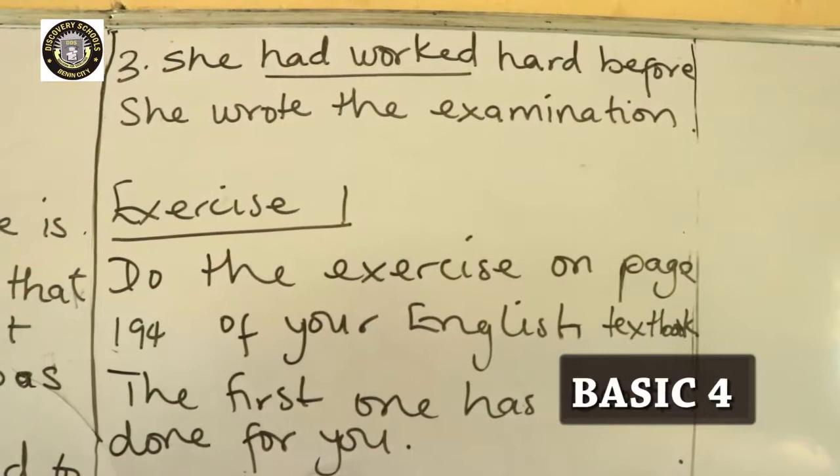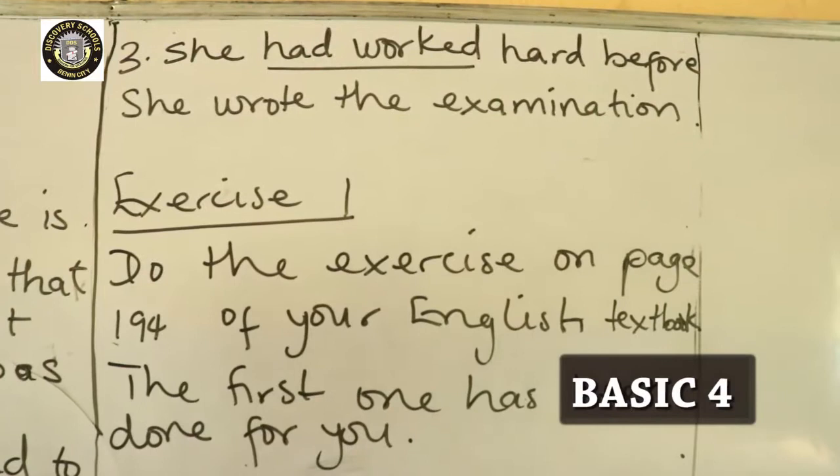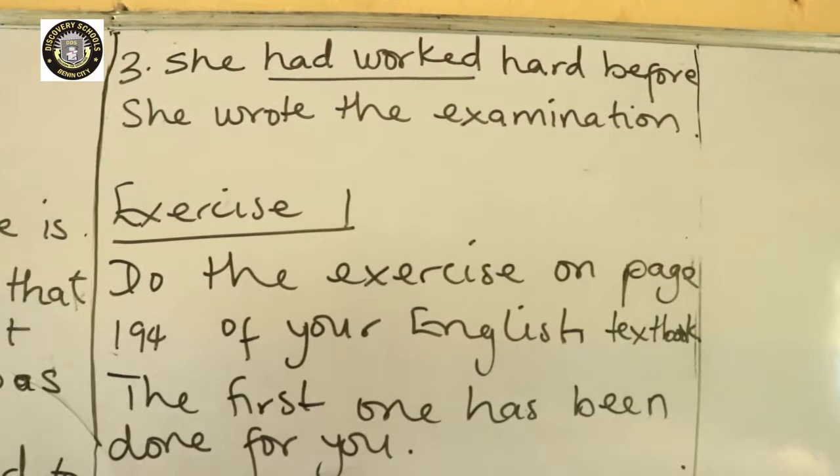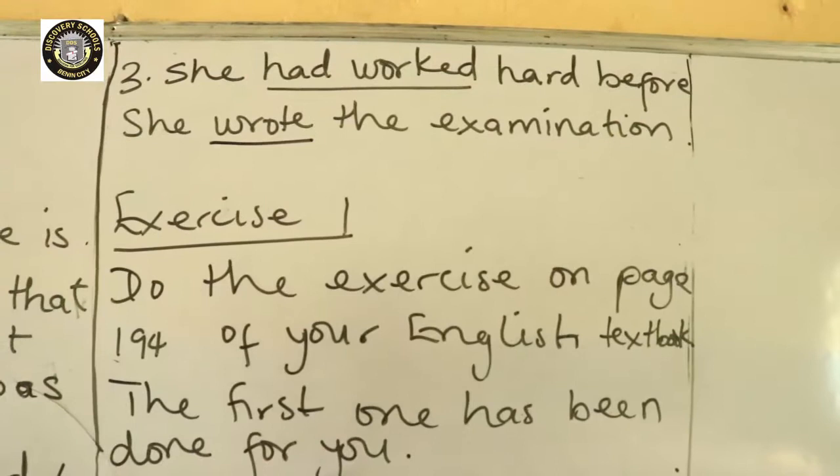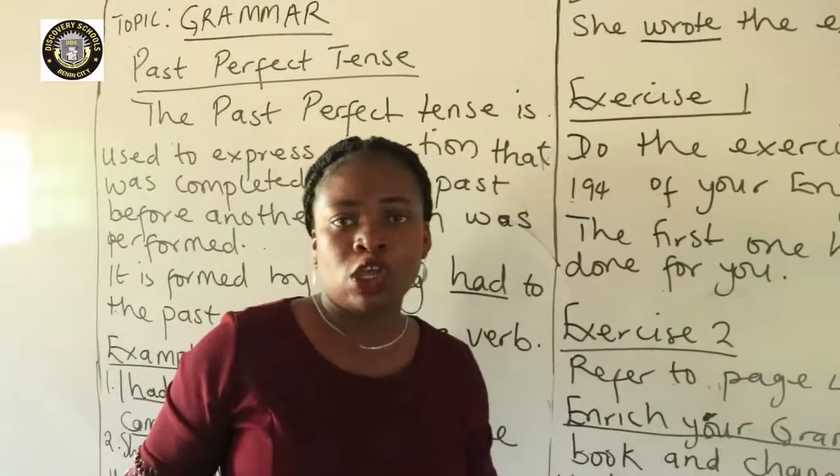In this particular sentence, there are two verbs: 'worked' and 'wrote.' That is to say, the person had worked hard before writing the examination. So the second verb here is 'wrote.' We will talk about the second action. You can as well give other examples using the past perfect tense.